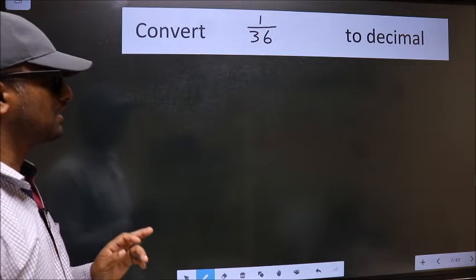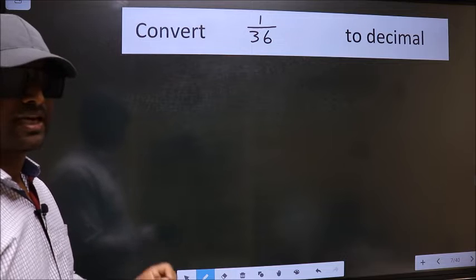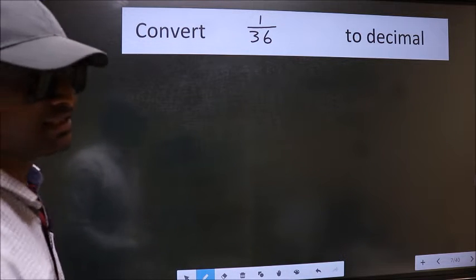Convert 1 by 36 to decimal. To convert to decimal, we have to divide. And to divide, we should frame it in this way.